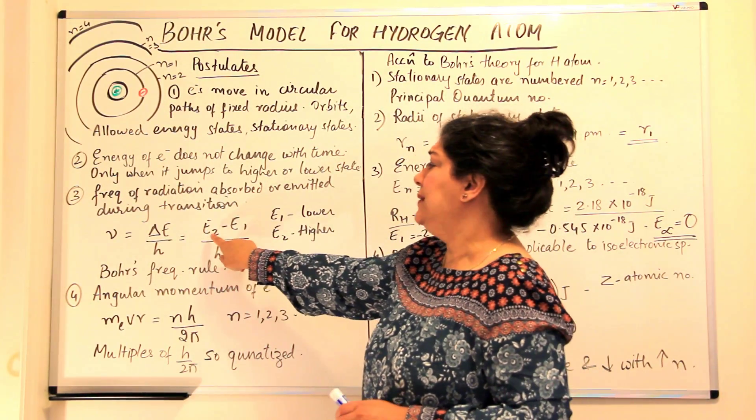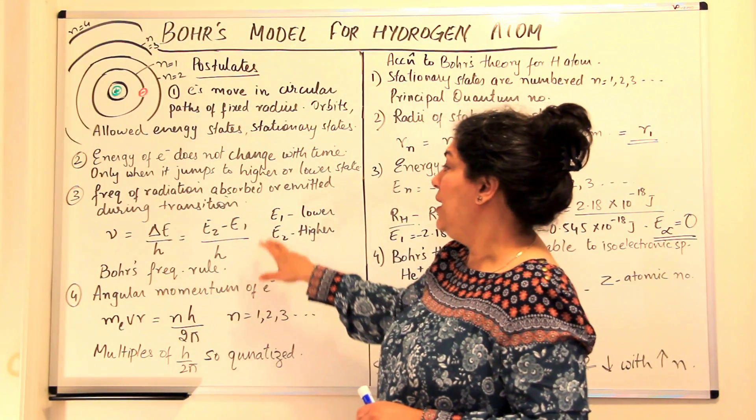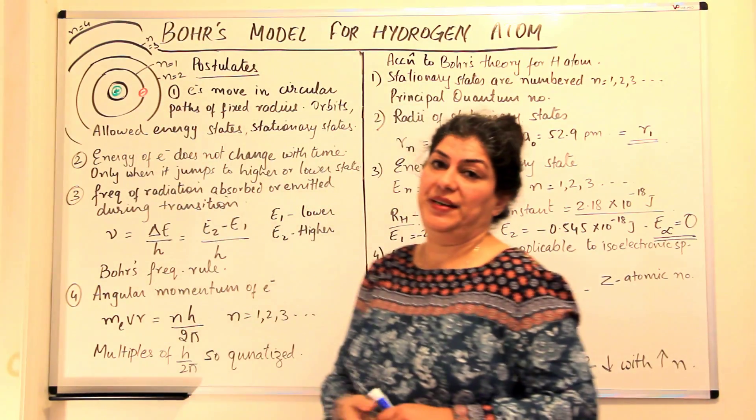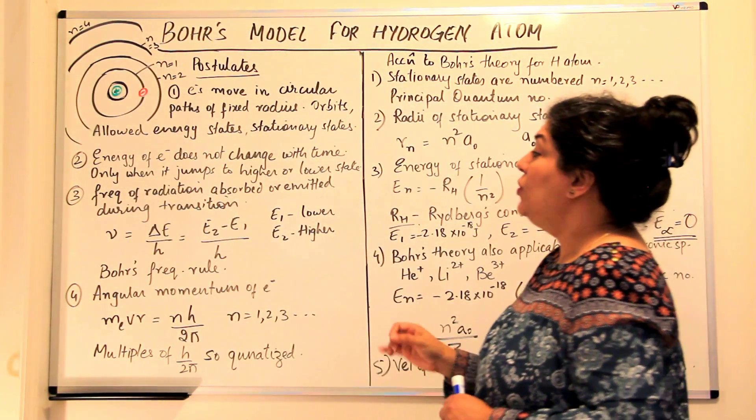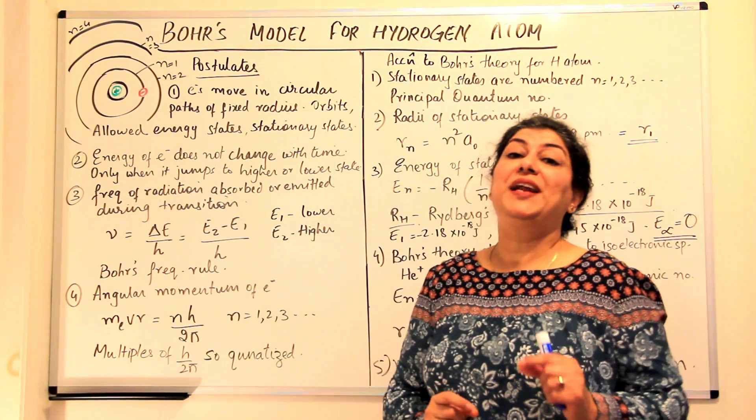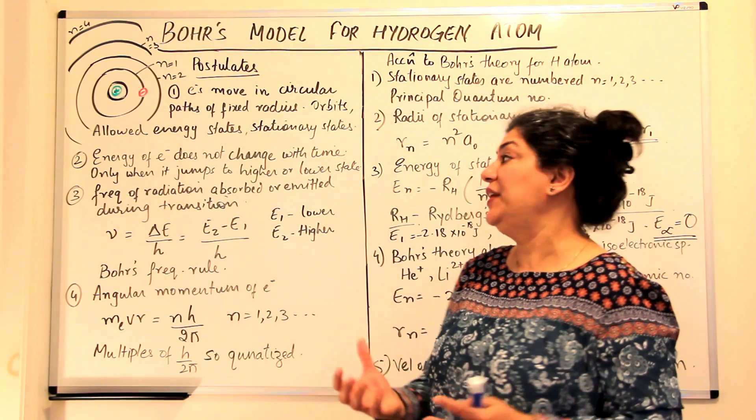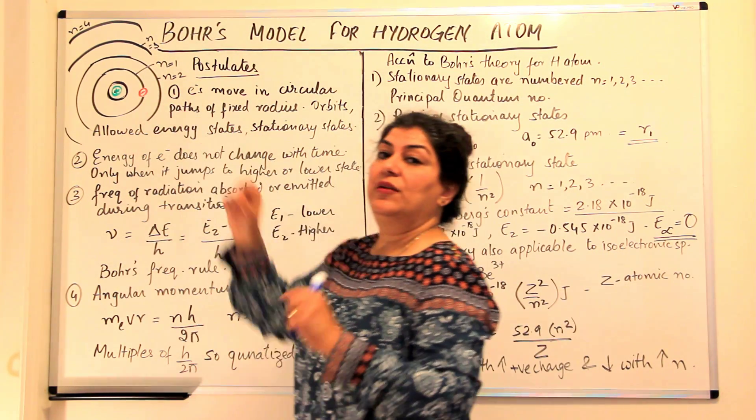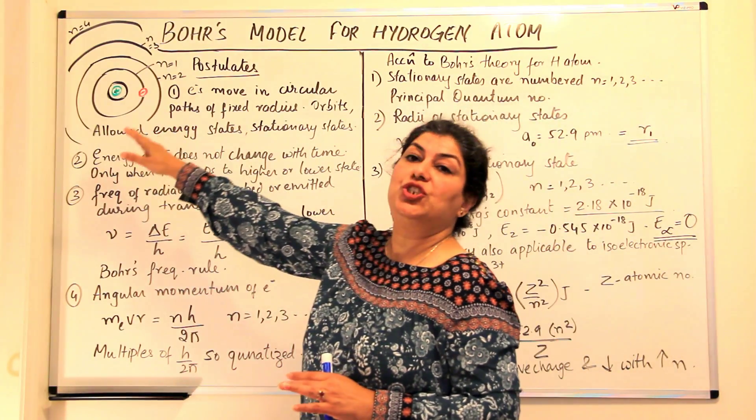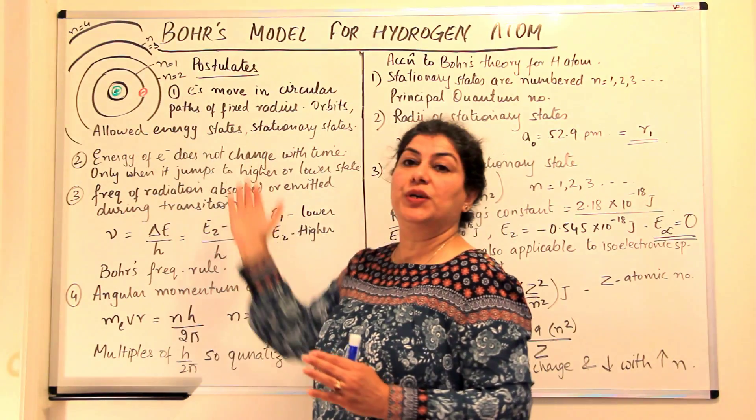So delta E would be given by E2 minus E1 where E1 is a lower energy state and E2 is a higher energy state. This formula that was given by Bohr was known as the Bohr's frequency rule by which you can calculate the frequency of the radiation which has to be emitted or absorbed when an electron jumps from one stationary state to the other.